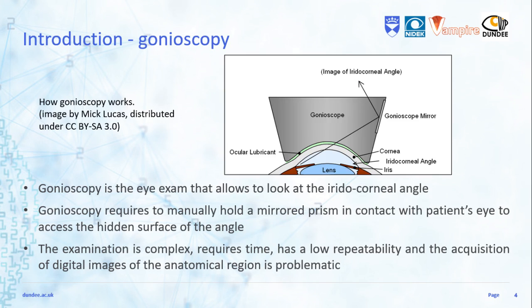The reference exam to inspect the iridocorneal interface is called gonioscopy. It is performed manually by holding a mirrored prism in front of the patient's eye. The image explains the working principle of gonioscopy — the light coming from the angle surface is reflected by the prism and directed towards the observer.